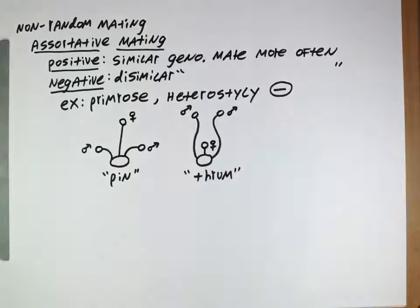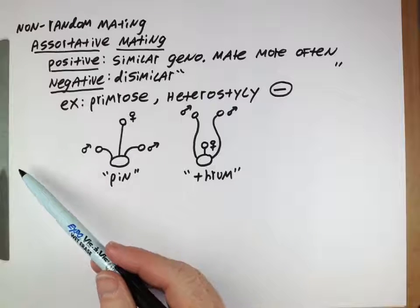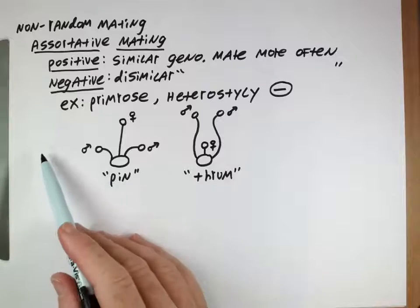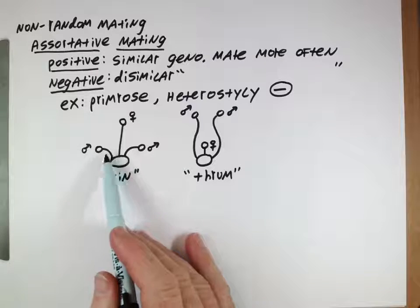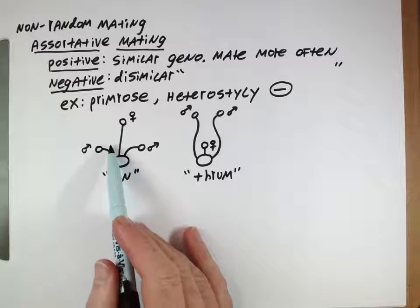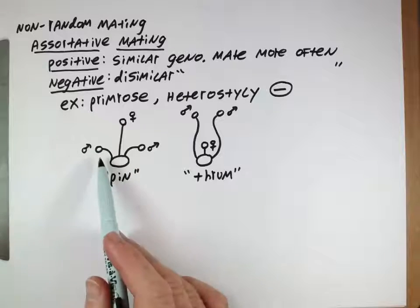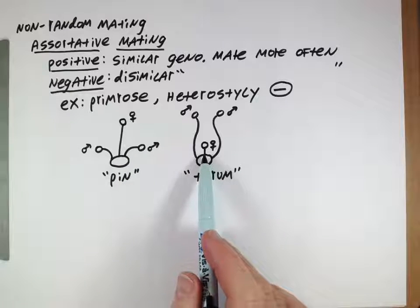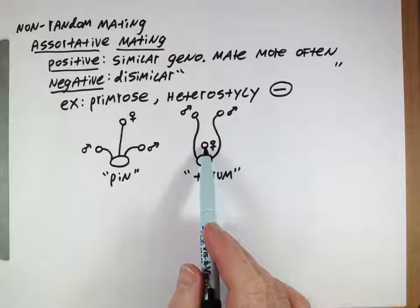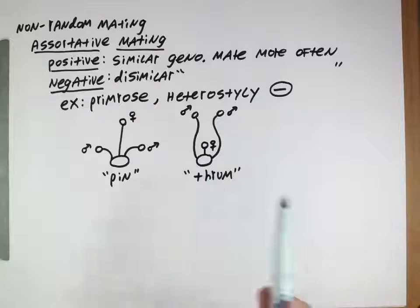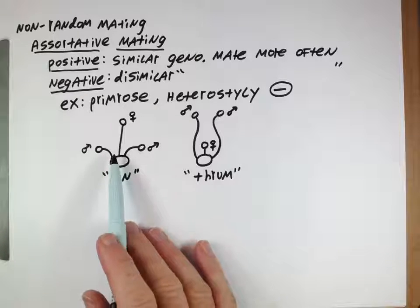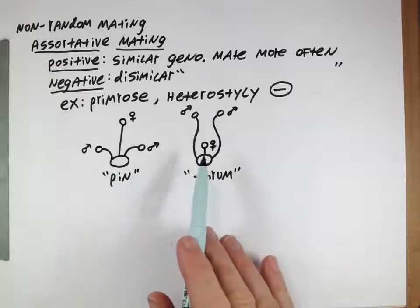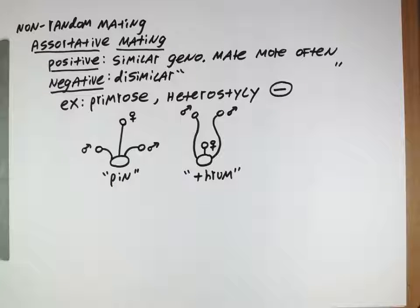The way this leads to negative assortative mating depends on what type of pollinator is involved. If a pollinator like a bee, which lands on the flowers, arrives on a pin, it'll walk around on the flower and get pollen all over itself. When it flies to another flower, if it lands on another pin, it'll just pick up more pollen. Only when it lands on a thrum will it transfer that pollen into the female portion of the plant and fertilize it. So the pollinators that land are taking gametes from pin and delivering them to thrum, but won't be delivering them usefully to other pin flowers.